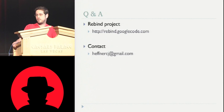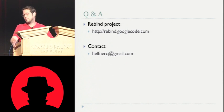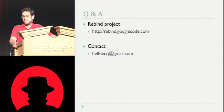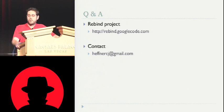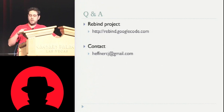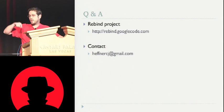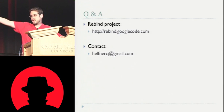Q&A: The JavaScript on the client proxies requests from the attacker to the router and back. It does a pull request back to Rebind, then Rebind tells it what to get. It fetches from the router and sends it back.